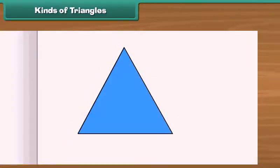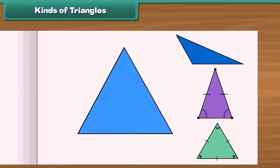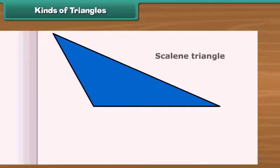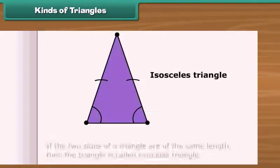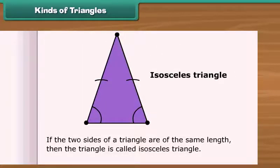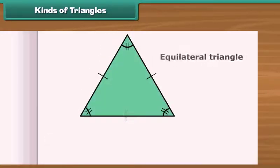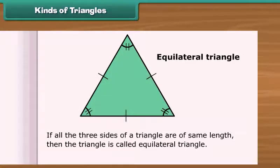The triangles can be classified into three types depending upon the number of equal sides that they contain. If all the three sides of a triangle are of different length, then the triangle is called scalene triangle. If the two sides of a triangle are of the same length, then the triangle is called isosceles triangle. If all the three sides of a triangle are of the same length, then the triangle is called equilateral triangle.